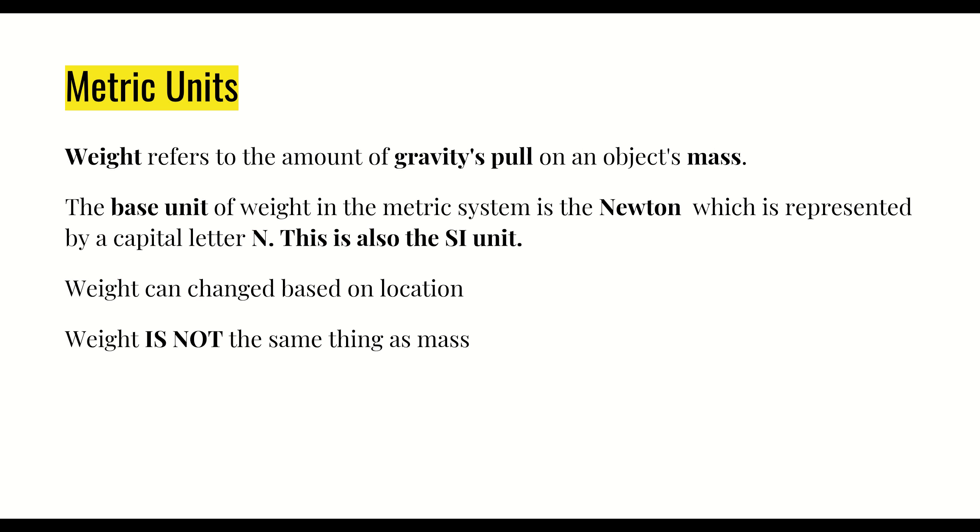Focusing on those metric units for weight, the first thing is weight refers to the amount of gravity's pull on an object's mass. Here's what's really important that we want to make sure we emphasize. There's this word mass, and we've talked about mass. Mass is really, in a very simple definition, the amount of matter or the stuff an object has. That's what we're looking at. Then our weight refers to the amount of gravity's pull on that object's mass.